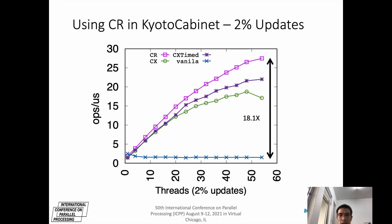This is a real application with 2.2% updates. From the picture, we can see CR is 18.1 times better than the original version. This demonstrates our benefit of efficient reads.